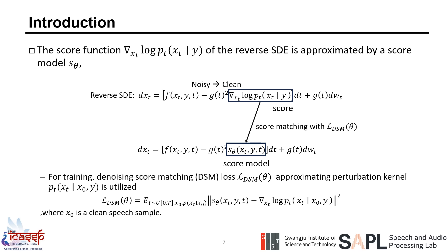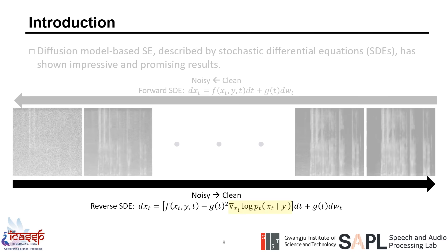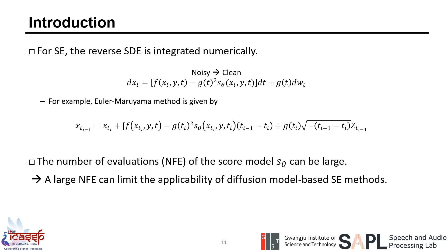In the reverse SDE, the derivative of the log of the conditional probability density function given Y appears. This derivative is called the score function. The score function is approximated by a score model by optimizing denoising score matching loss. This training approach is called score matching. When the score function is learned by the score model, it is replaced in the reverse SDE, which is then integrated with numerical methods such as the Euler-Maruyama method.